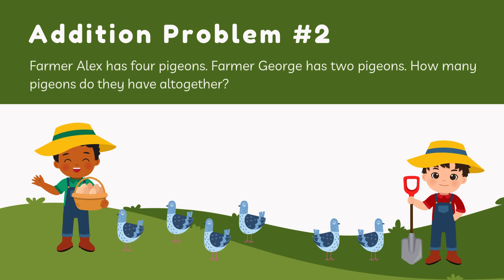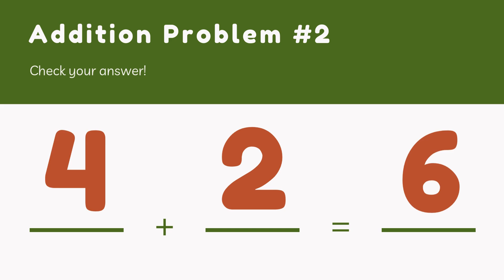Now another addition problem for you. Farmer Alex has four pigeons. His friend Farmer George has two pigeons. How many pigeons do they have all together? Four pigeons plus two more pigeons will make six pigeons together. Good job!